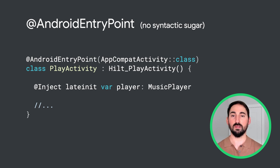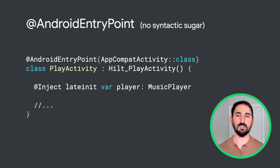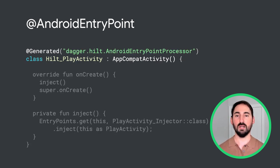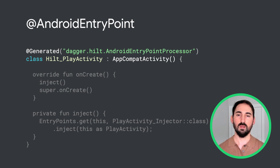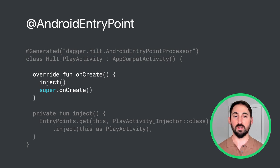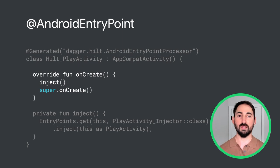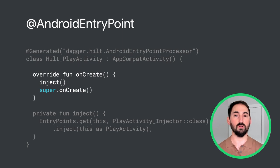This class is generated by Hilt's annotation processors and contains all of the logic necessary to perform injection. The generated class extends AppCompatActivity — or in general, whichever class was passed into the Android Entry Point annotation — allowing injection to work with any base class you want. The main purpose of this generated class is to handle injection. It's important to perform injection as early as possible to prevent accidental access to a field before it's been injected. Thus, for activities, injection occurs during the onCreate method.